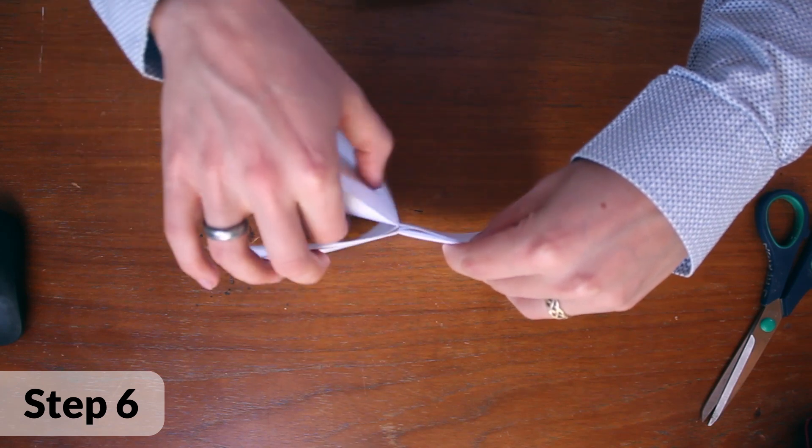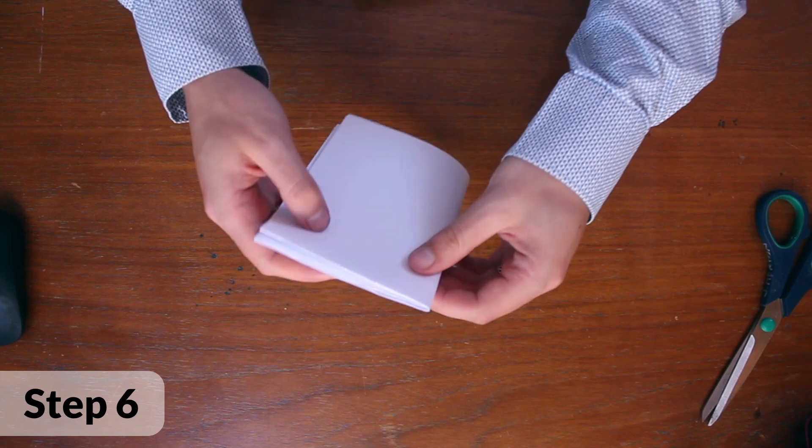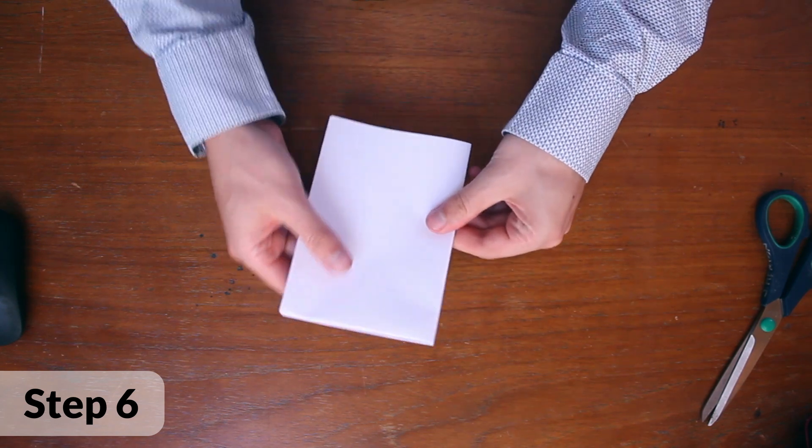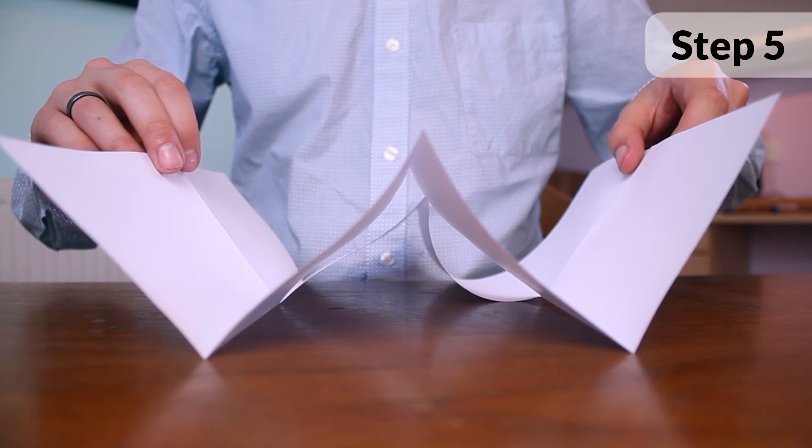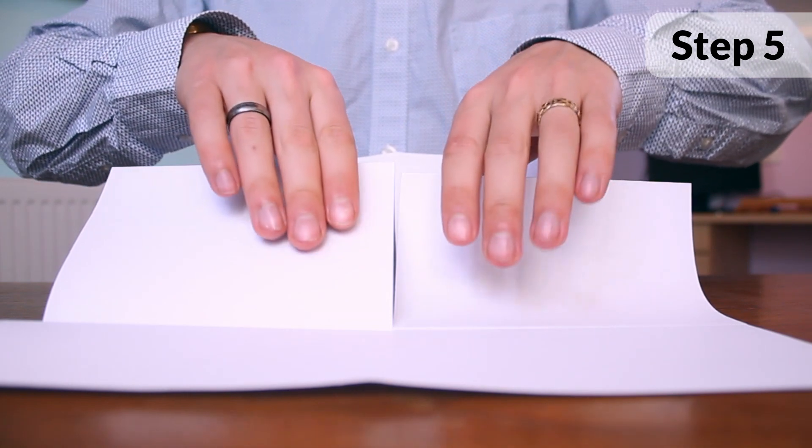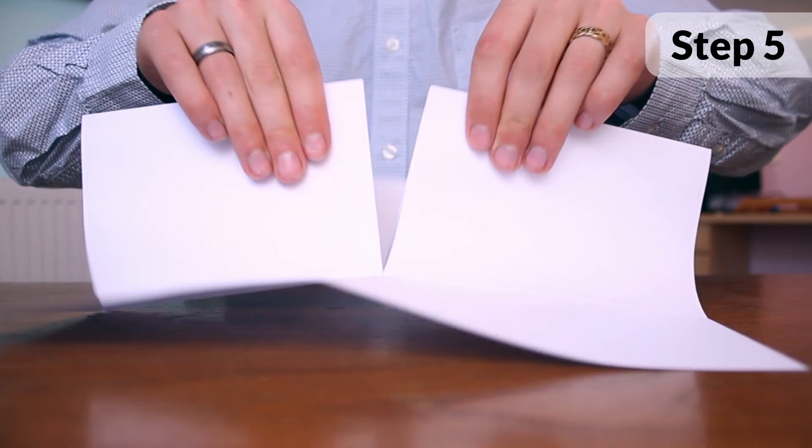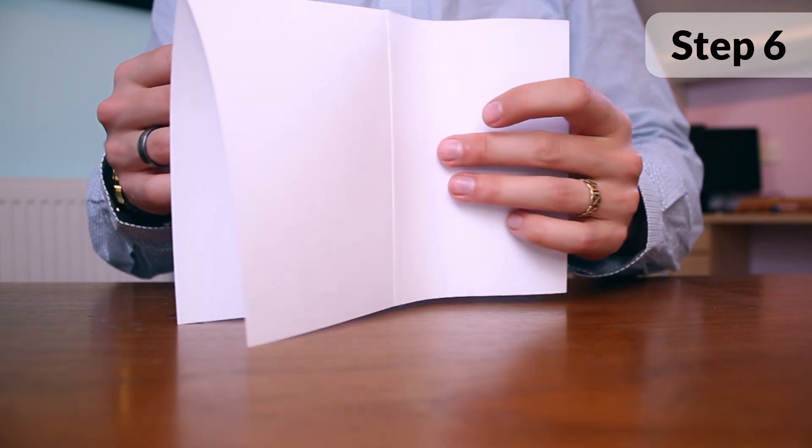These will be the four pages of your book. Fold these around on themselves and you can form your book. Pinching the middle of that W, fold each side away from each other and then fold them back on themselves to form that book.